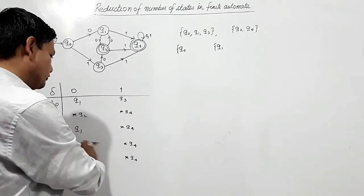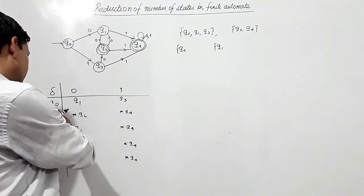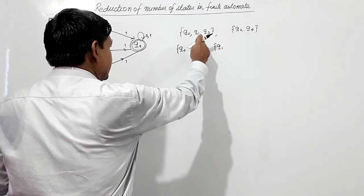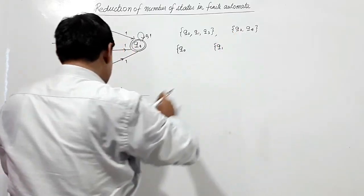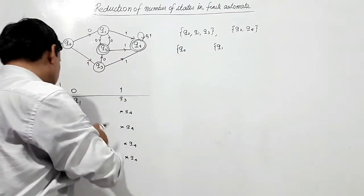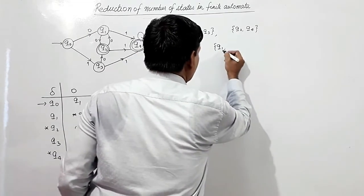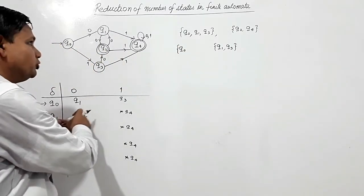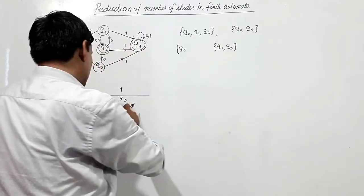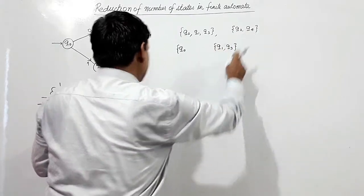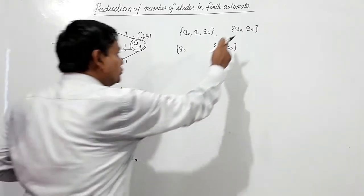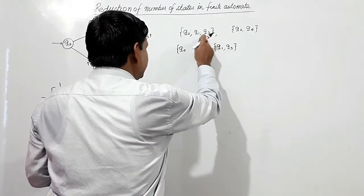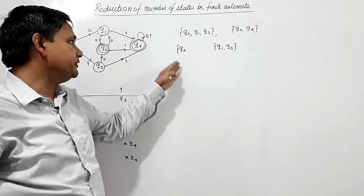Q3 on 0 and 1 is going to final states Q2 and Q4. Q1 on 0 is going to Q2 which is in the final set, and Q1 on 1 is going to Q4 which is also in the final set. Q3 on 0 is going to Q2 and on 1 to Q4 — both in the final set. So Q1 and Q3 can be merged, and that is why Q1 was segregated from Q0.